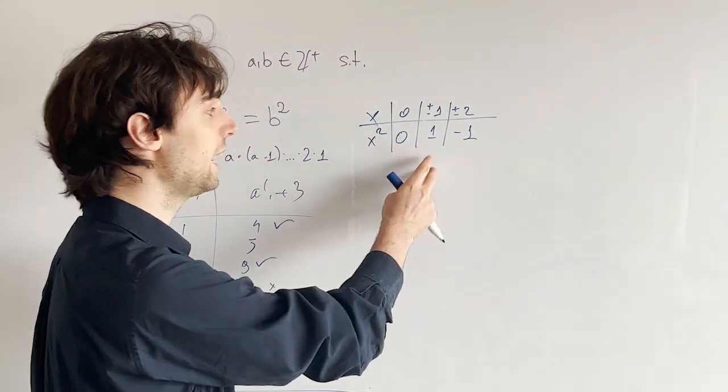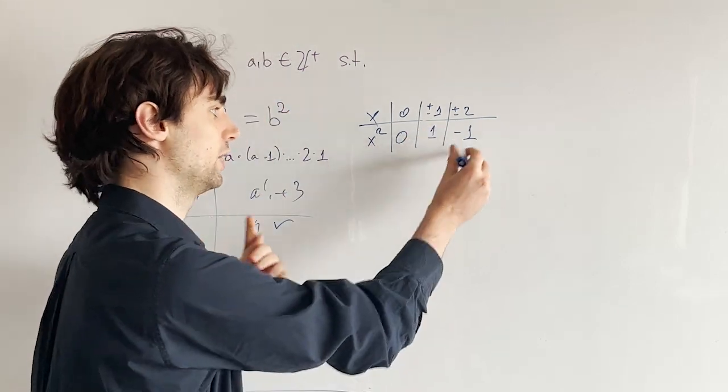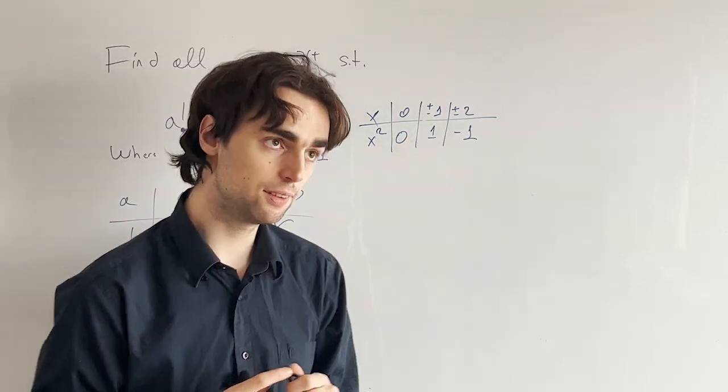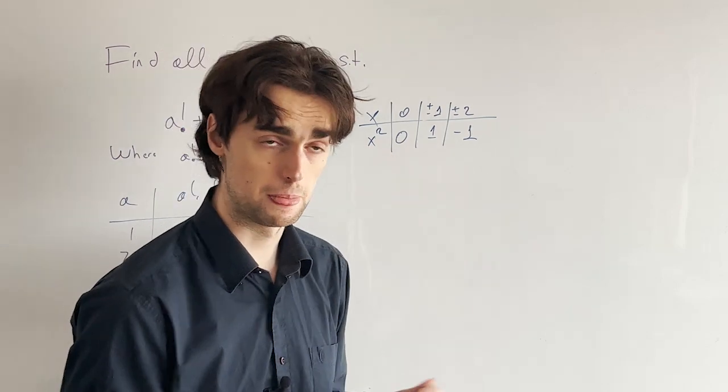So in every single one of these cases, x squared, a square can only give remainders of 1 or negative 1 when divided by 5, right?